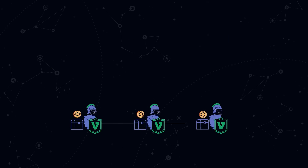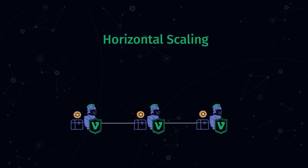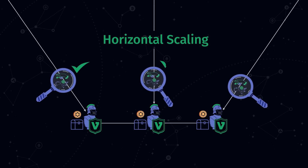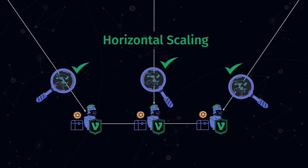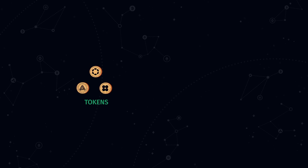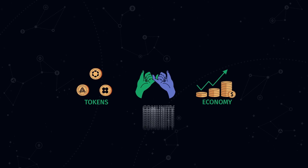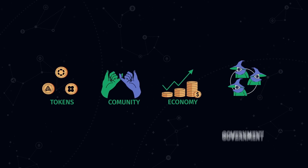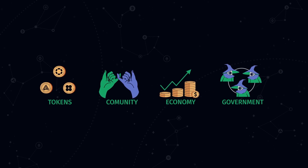This workload sharing approach is called horizontal scaling, and it is designed to relieve validators from having to verify all transactions on the blockchain. Like almost any network, parachains have their own tokens, their economy, their community and system of government.